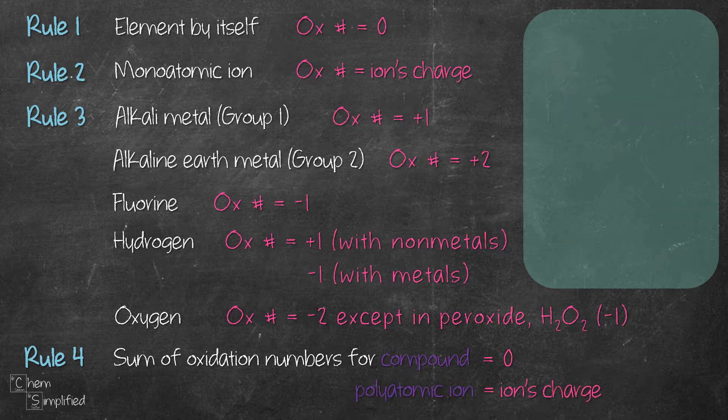The same idea applies to polyatomic ion. The sum of oxidation numbers for polyatomic ion equals the polyatomic ion's charge. Polyatomic ion simply refers to any ion that consists of more than one type of atom. For example, CO32 minus carbonate ion. It has two types of atom in that ion, so it's a polyatomic ion.